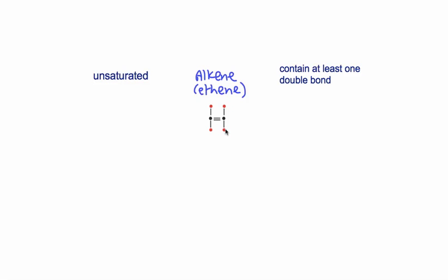The last thing you need to know is the general formula. We looked at the general formula of the alkanes in a previous video. The general formula for the alkenes is CₙH₂ₙ.